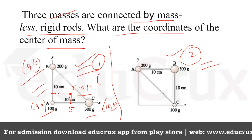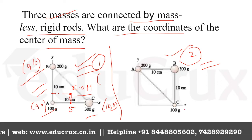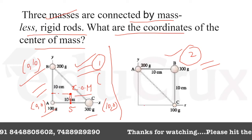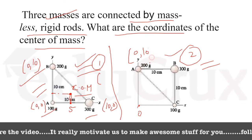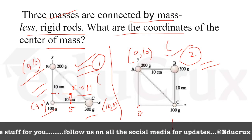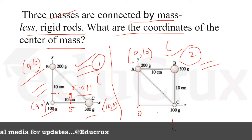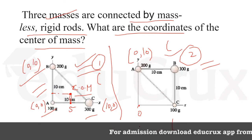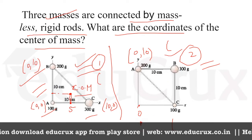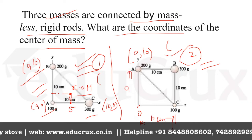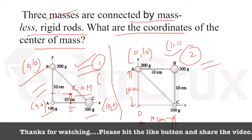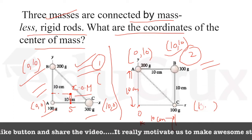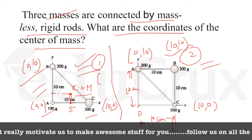Now we calculate for the second figure. Here the x and y axes are set up similarly with the origin at (0, 0). For point A the coordinate is (0, 0), for point B the coordinate is (10, 10), and for point C the coordinate is (10, 0).